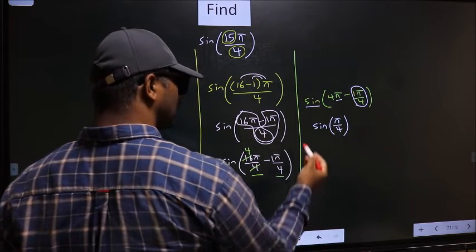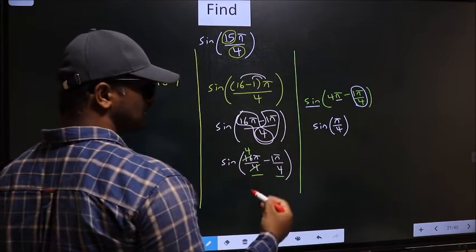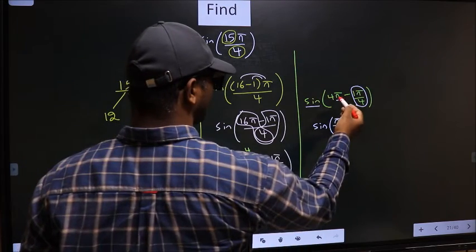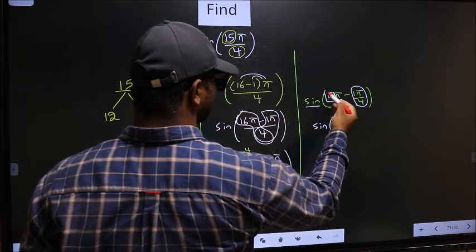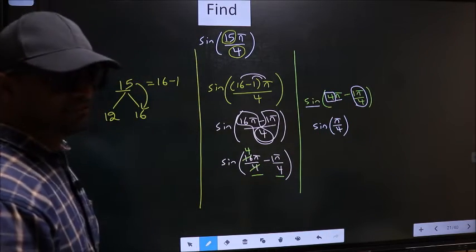Now the question is, will we get here plus or minus? To answer that, you should look at the number before π, which is 4. And 4 is even.